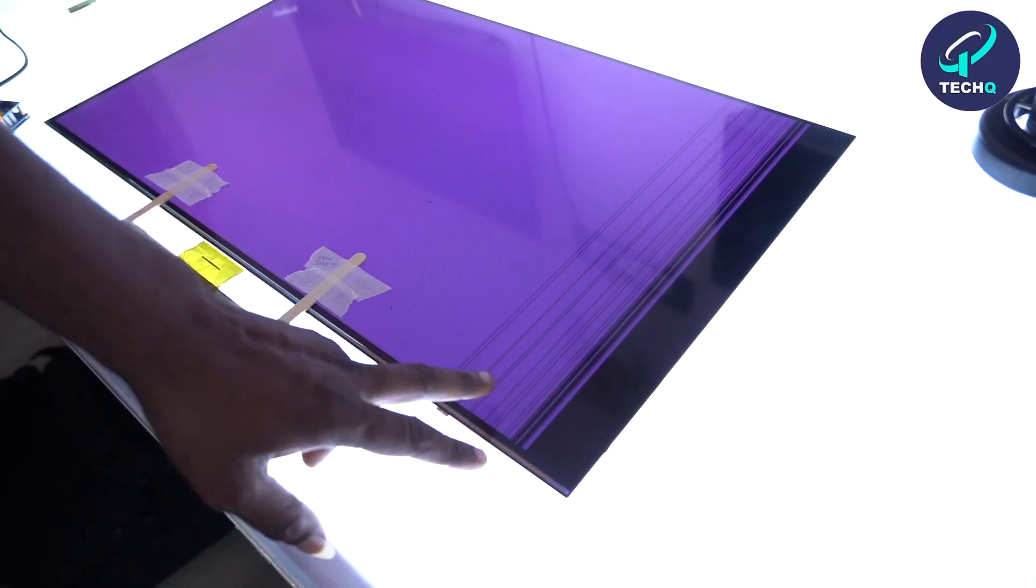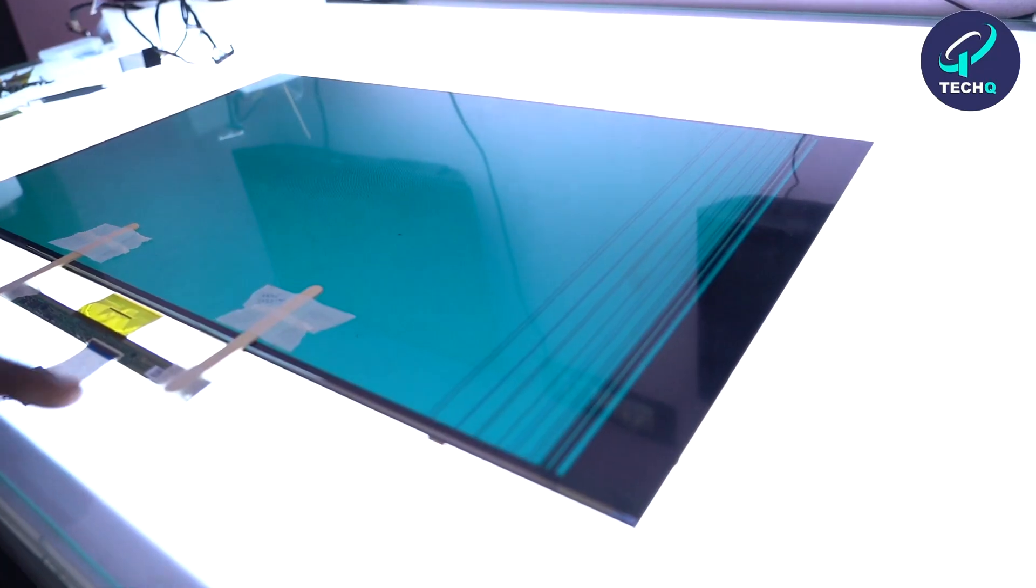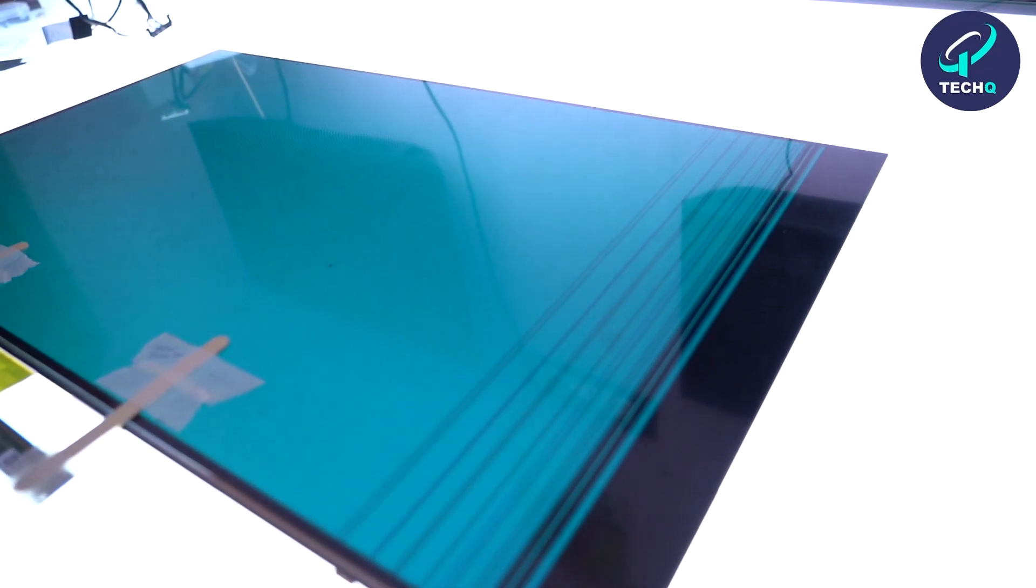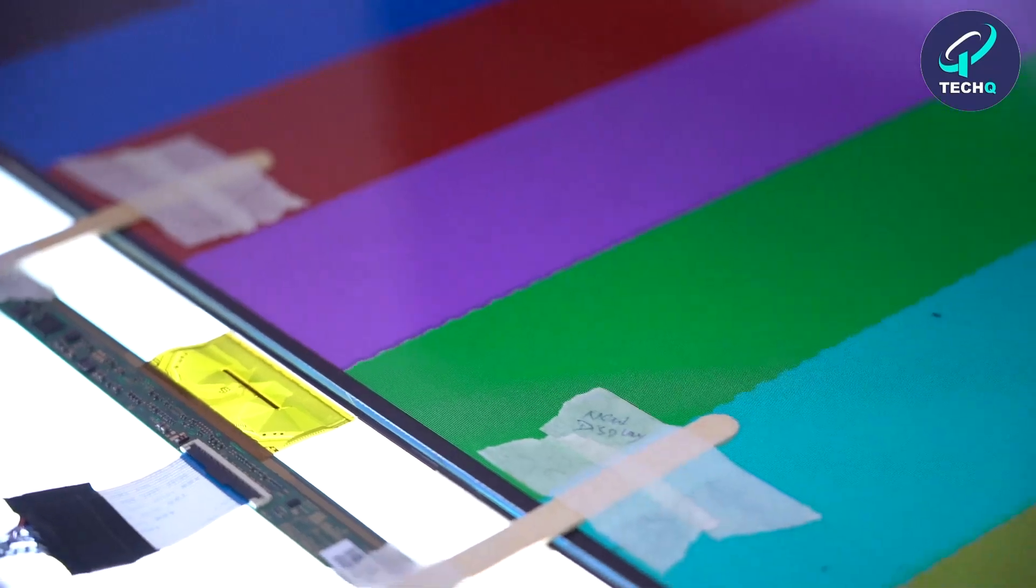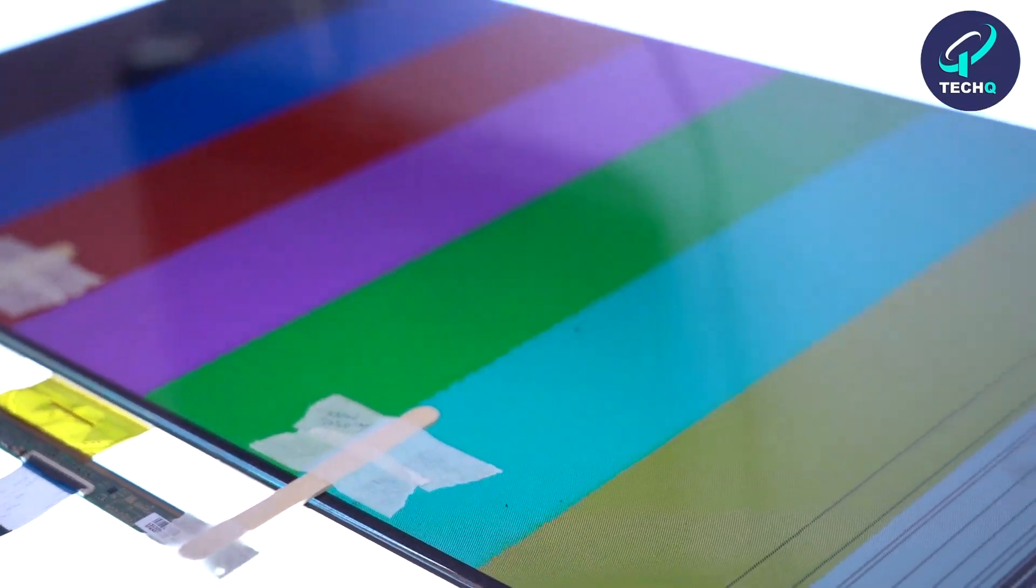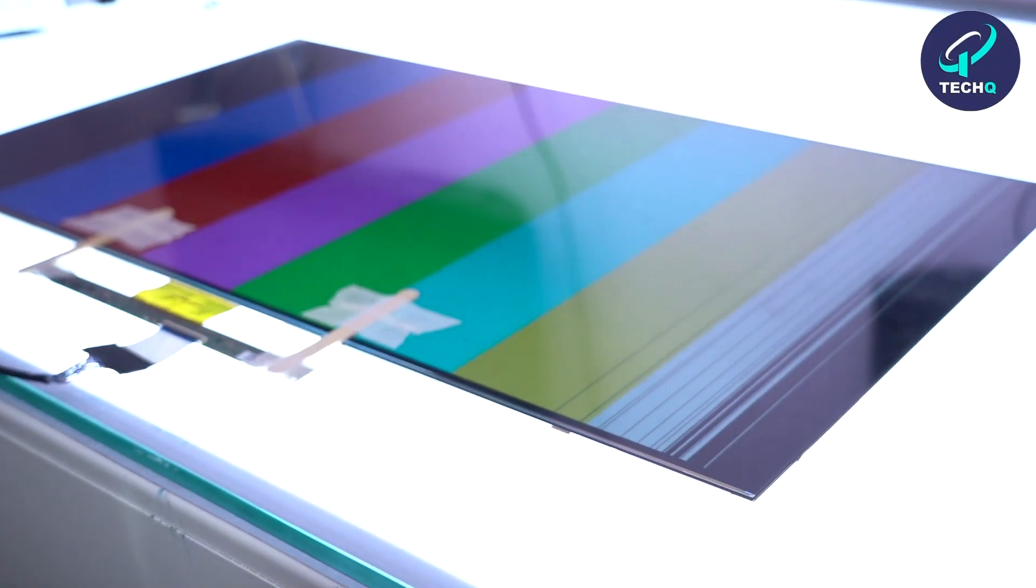There are many problems in the screen. For example, you get lines or dots. You get vertical line, vertical bar, horizontal line or horizontal bar, or completely the display goes off. You don't get any pictures.